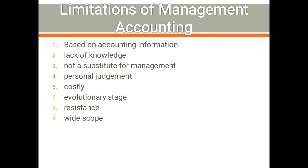The next limitation is personal judgment. Management accounting is prepared by the management accountant, and his personal judgment will influence the information measured in the management accounts. When the management accountant interprets or analyzes results, he uses his own personal judgment to derive the information, which influences the information specified in the accounting reports.